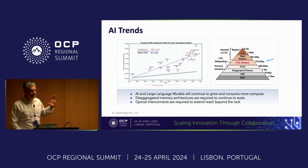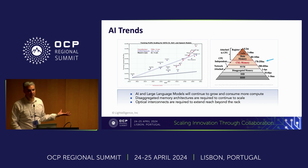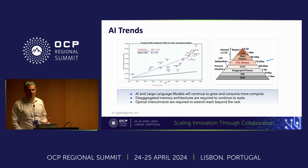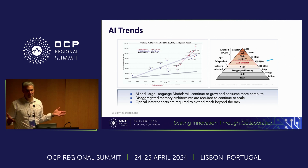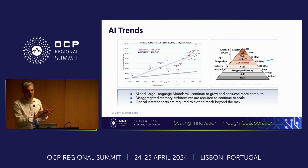The models continue to grow and what we're seeing is that disaggregated architectures are required to help them expand. You can't fit your model in a single server — in fact, multiple racks of servers are required to run these models. So why CXL? In this world, it's all about latency and memory bandwidth.